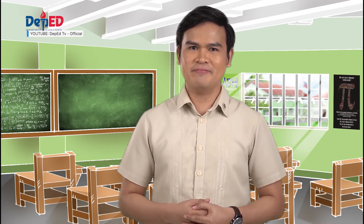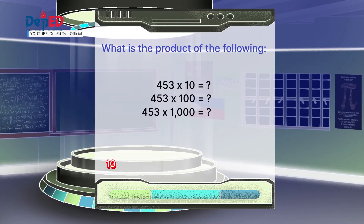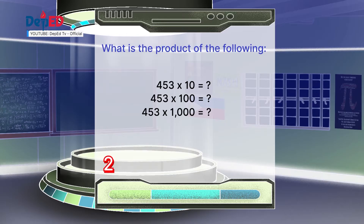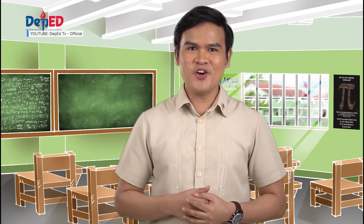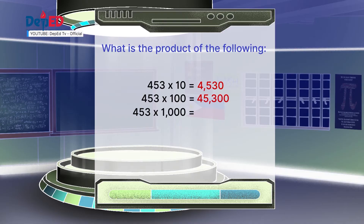What is the product of the following? Time is up! Let's check your answers. Here are my answers: 453 times 10 equals 4,530. 453 times 100 equals 45,300. 453 times 1,000 equals 453,000.